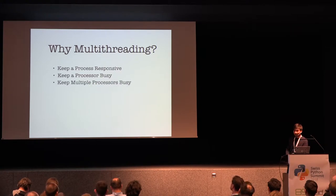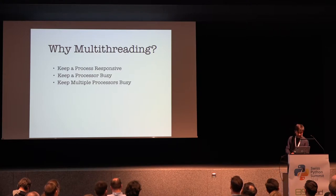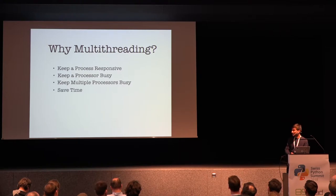Keep multiple processors busy — you've got 36 cores and you want to use all of them at the same time. Why sit idle when you have that much power? And obviously save time — no one likes to sit idle and wait for threads to complete.